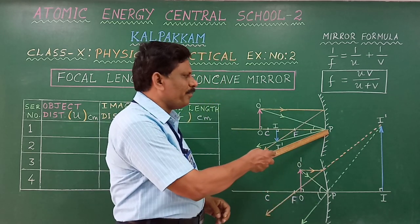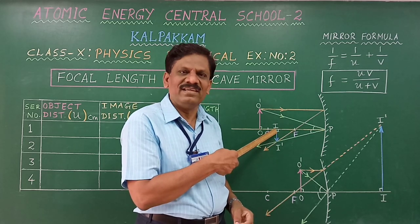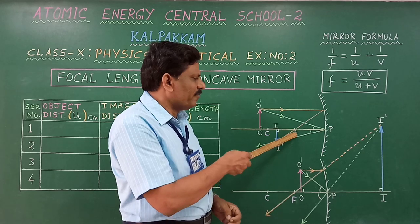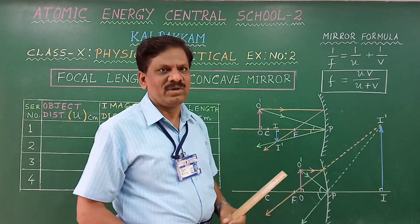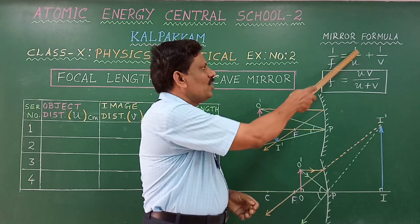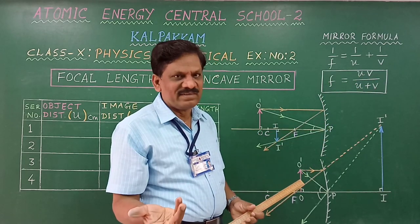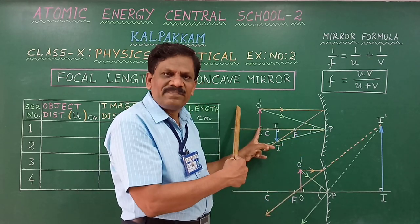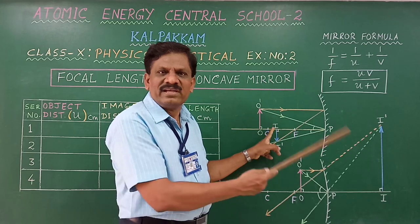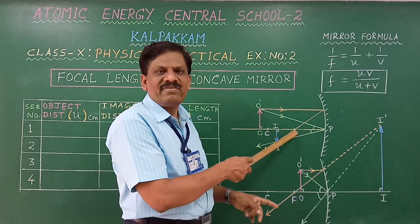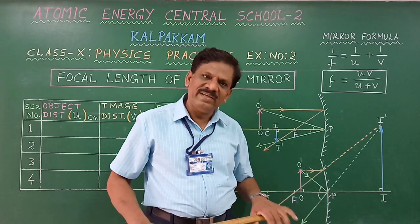The distance from the pole to the object is called object distance U. The distance from the pole to the image is image distance V. The distance from the pole to the focus is the focal length F. We are going to determine the focal length using the mirror formula: 1/F = 1/U + 1/V, or F = UV/(U+V). By sign conventions, U, V, and F are all negative for a concave mirror forming a real image.